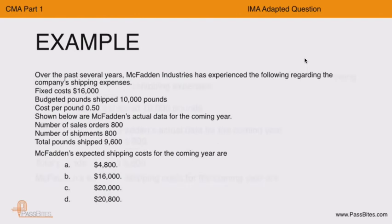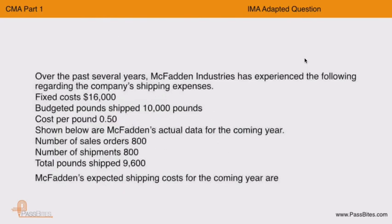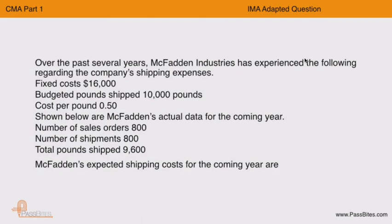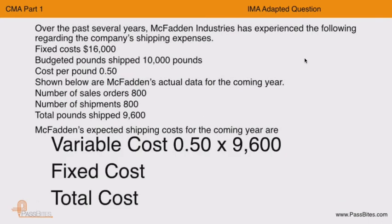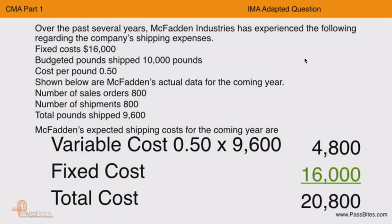To find the flexible budget figure, we first find the variable cost according to actual output. The variable cost is $0.50 multiplied by actual pounds shipped of 9,600, giving $4,800. Fixed cost does not change and remains $16,000, resulting in a total flexible budget cost of $20,800. So we are changing the variable cost but not the fixed cost.